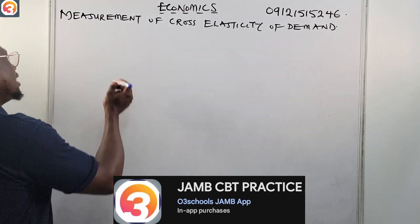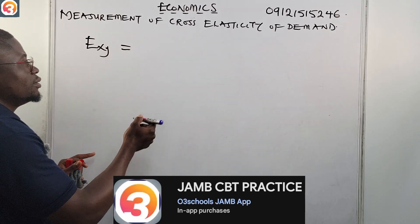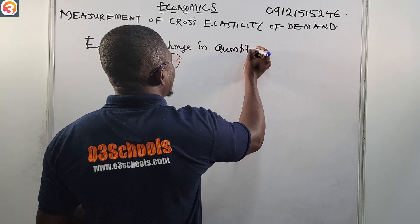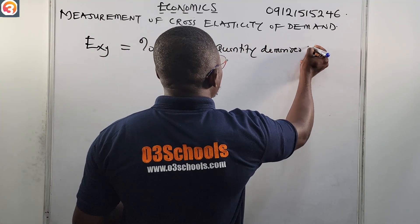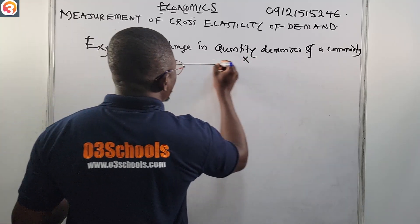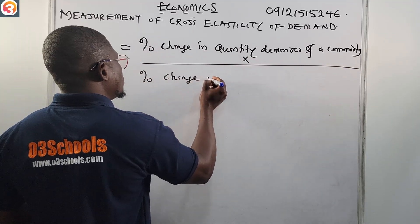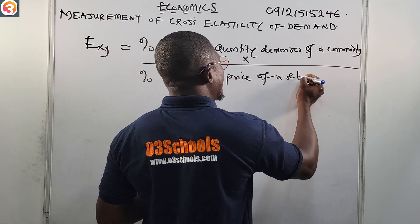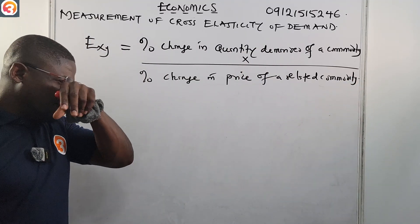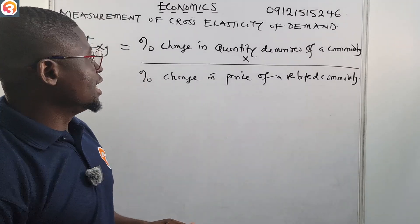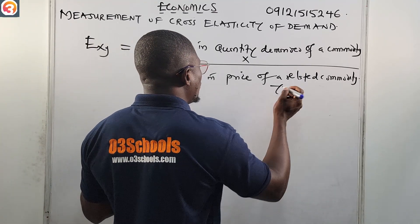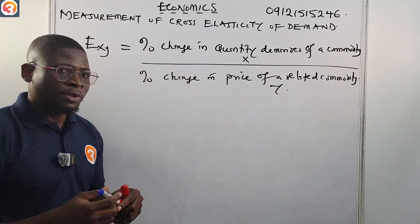E(XY) represents cross elasticity of demand. E(XY) equals the percentage change in quantity demanded of a commodity X or Y, all over the percentage change in price of a related commodity. So this is how we define cross elasticity of demand mathematically — percentage change in quantity demanded of commodity X or Y, divided by percentage change in price of the related commodity Y or X.